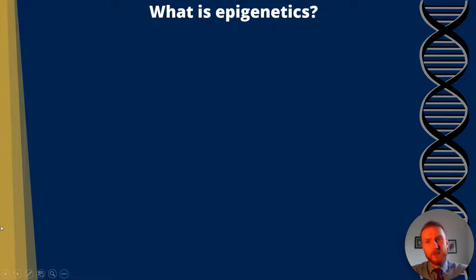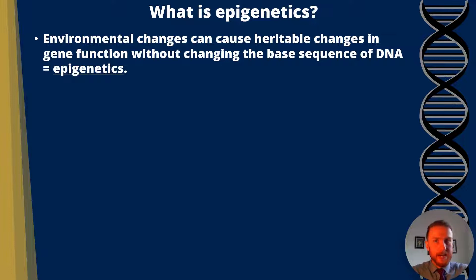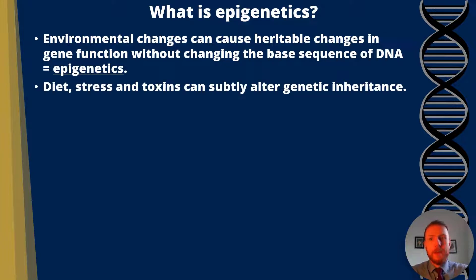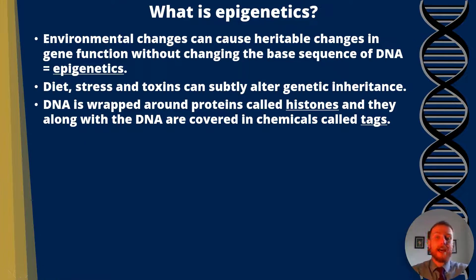What is epigenetics? Environmental changes can cause heritable changes in gene function without changing the base sequence of DNA. Diet, stress, and toxins can subtly alter genetic inheritance. DNA is wrapped around proteins called histones, and they, along with the DNA, are covered in chemicals called tags.